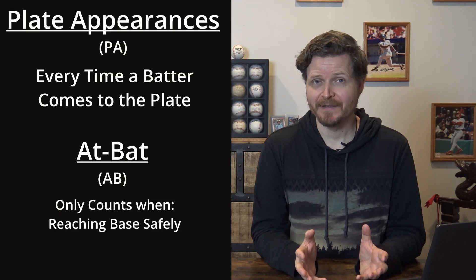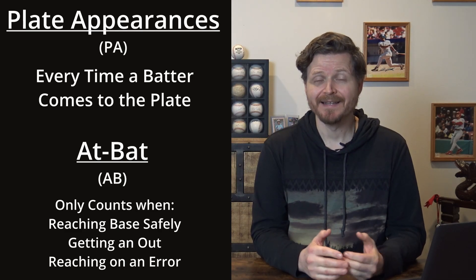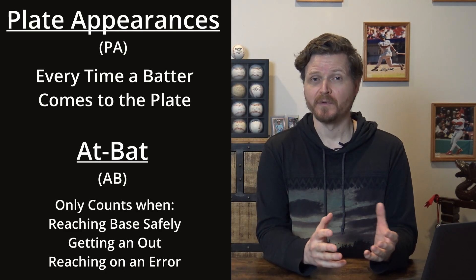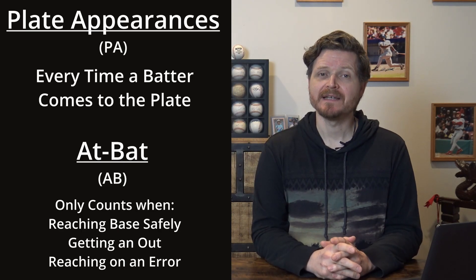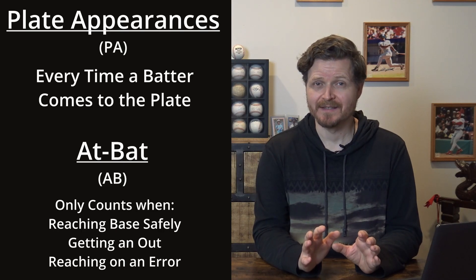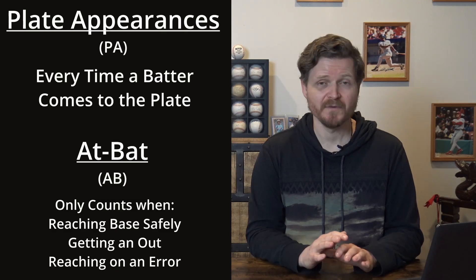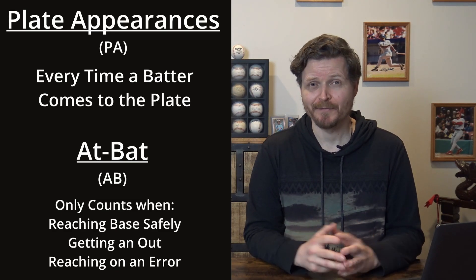An at bat is only counted if a batter does one of three things: reaching base safely on a base hit, getting an out, or reaching base on an error. That means a plate appearance that results in either a walk or a hit batter doesn't count as an at bat. There are a couple of minor exceptions — if you want to learn more, look at sacrifice flies or bunts. I'll explain why this difference matters when we get to rate stats like batting averages and on base percentages.